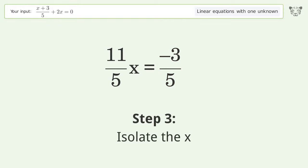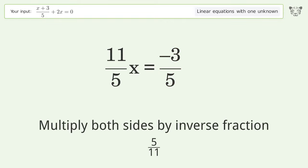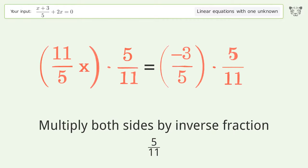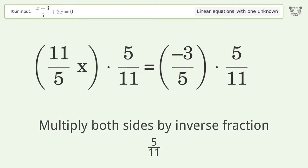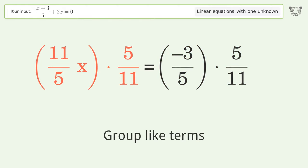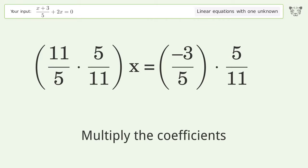Isolate the x. Multiply both sides by the inverse fraction 5 over 11. Group like terms, multiply the coefficients.